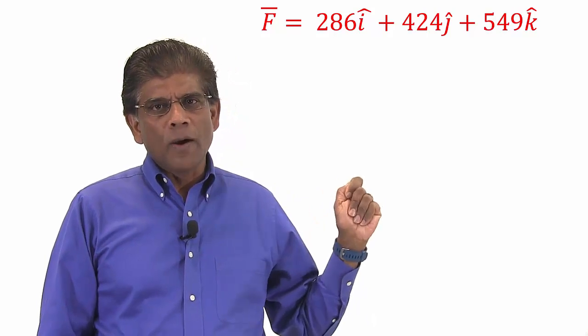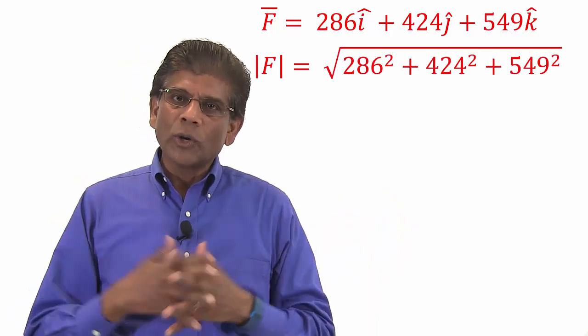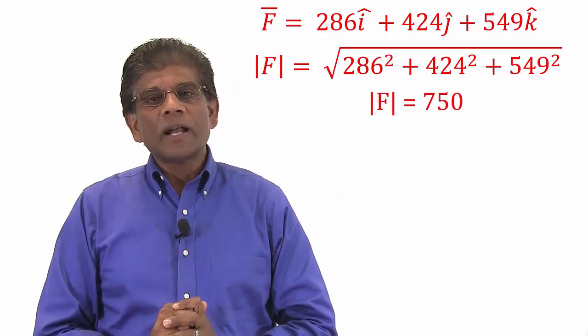The magnitude of this vector can be found by squaring each term, summing them up, and finding the square root. This value happens to be 750.